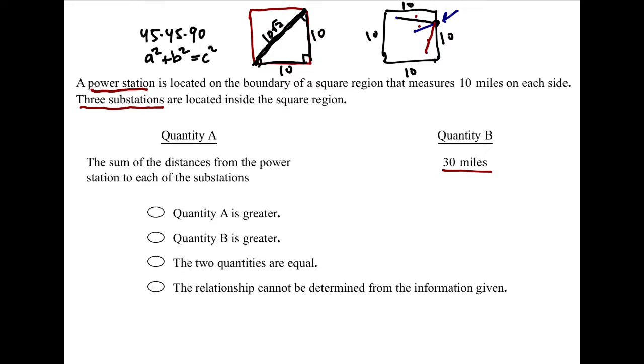So if I were to place my substations as far away as possible from, let's say, a power station in this corner, I would pretty much assume that these red lines are not quite going to be the 10 root 2 here, but they're pretty close to the length 10 root 2, which would tell me that they're going to give me a sum that is greater than 30 miles.